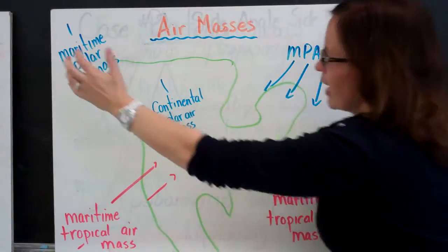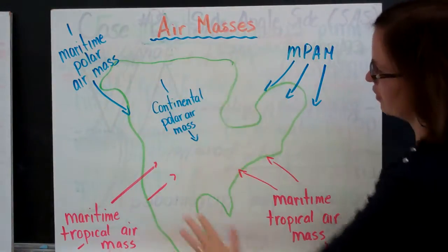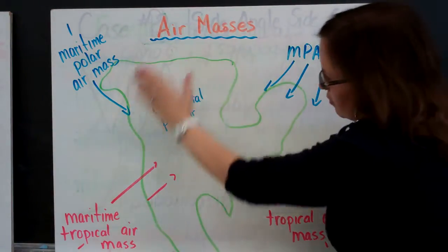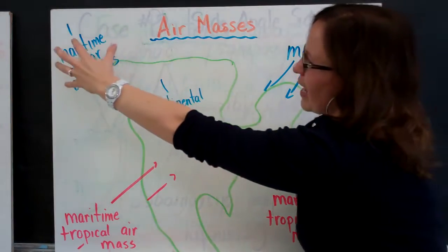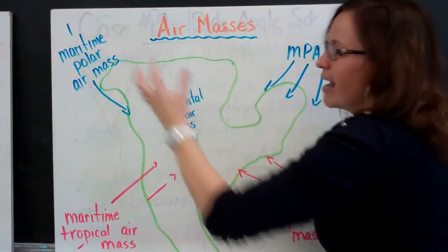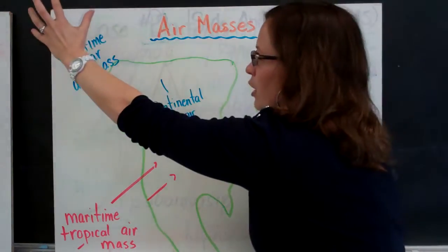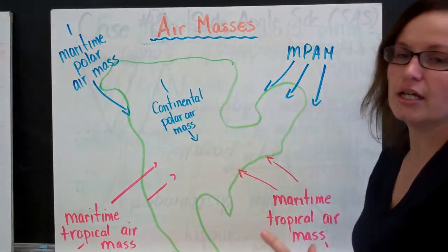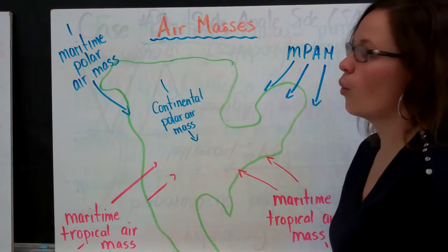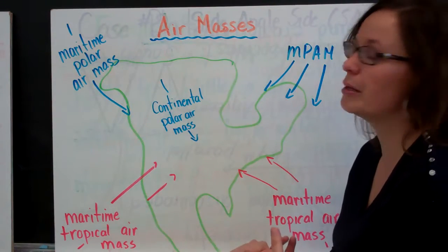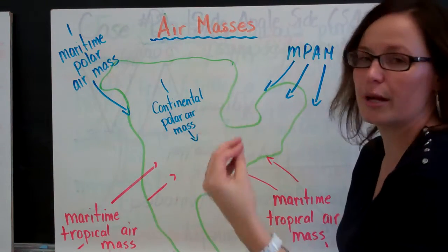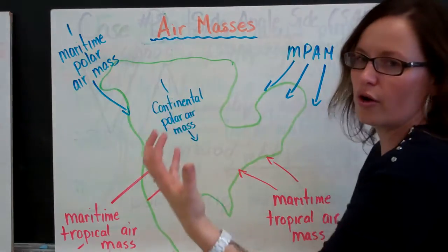So if we have a maritime polar air mass, so if we imagine this is North America, try to imagine it. I know it looks bad. So we have an air mass that originates in a polar region and it originates in an ocean in a polar region. So it would have two characteristics. One, it would be cool in temperature and two, it would be moist because it was created over a polar region, sorry, over water.